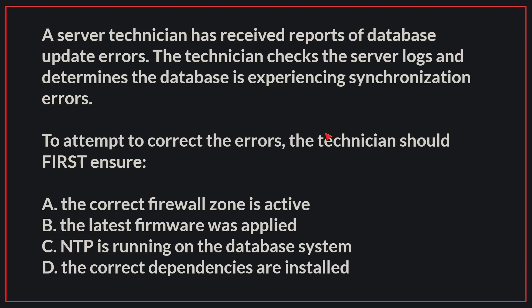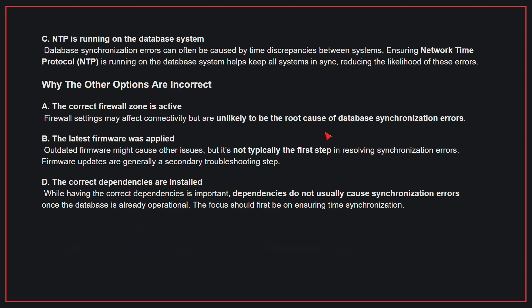A server technician has received reports of database update errors. The technician checks the server logs and determines the database is experiencing synchronization errors. To attempt to correct the errors, the technician should first ensure the correct answer is C: NTP is running on the database system. Database synchronization errors can often be caused by time discrepancies between systems. Ensuring Network Time Protocol is running on the database system helps keep all systems in sync, reducing the likelihood of these errors.